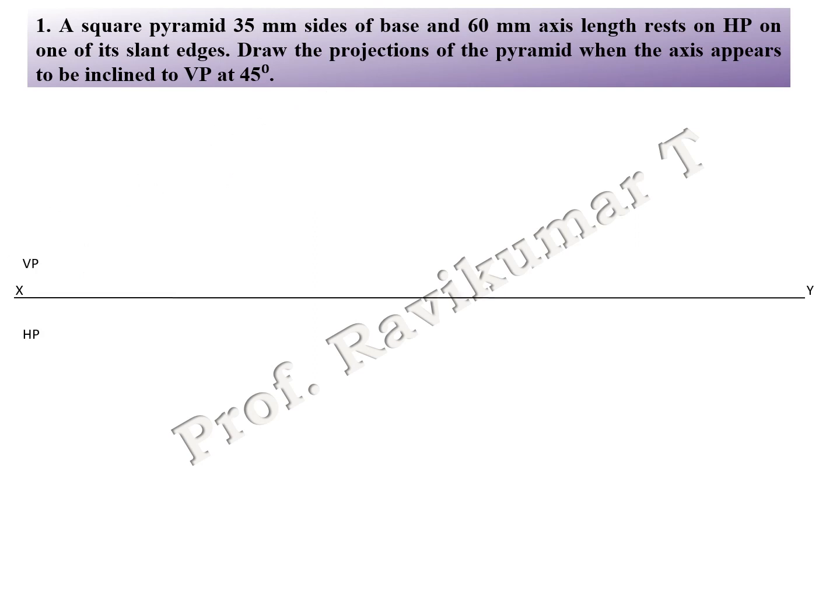You can see the first problem: square pyramid, 35mm sides of base, 60mm axis length, resting on HP and one of its slant edges. Slant edge means corner — only 2 points together. Draw the projection when axis appears to be inclined to VP at 45 degrees. This is a without-locus problem and it is a slant edge, so slant edge means corner condition.